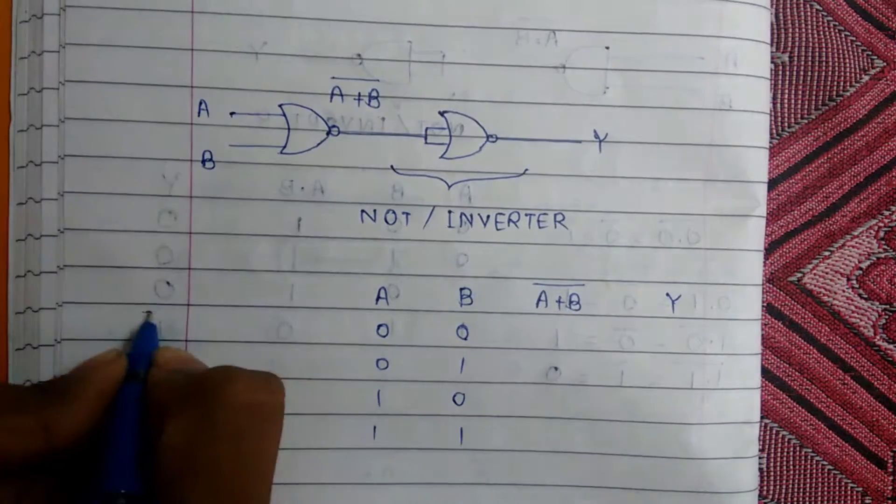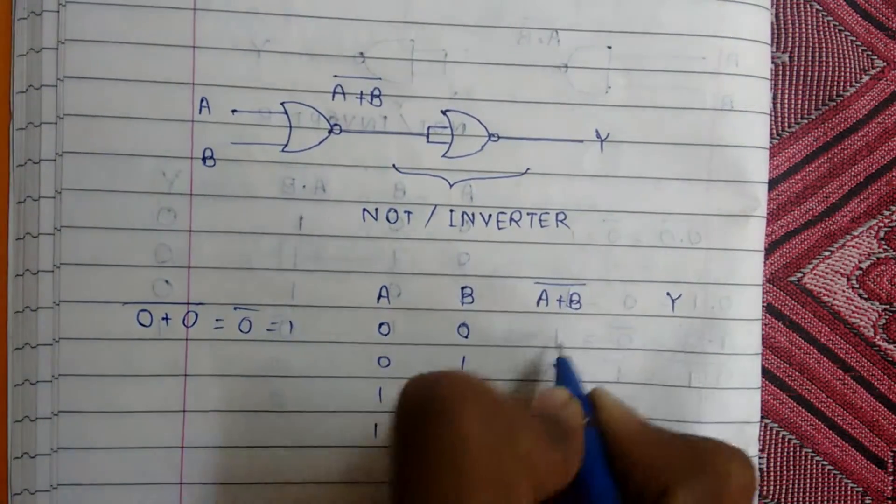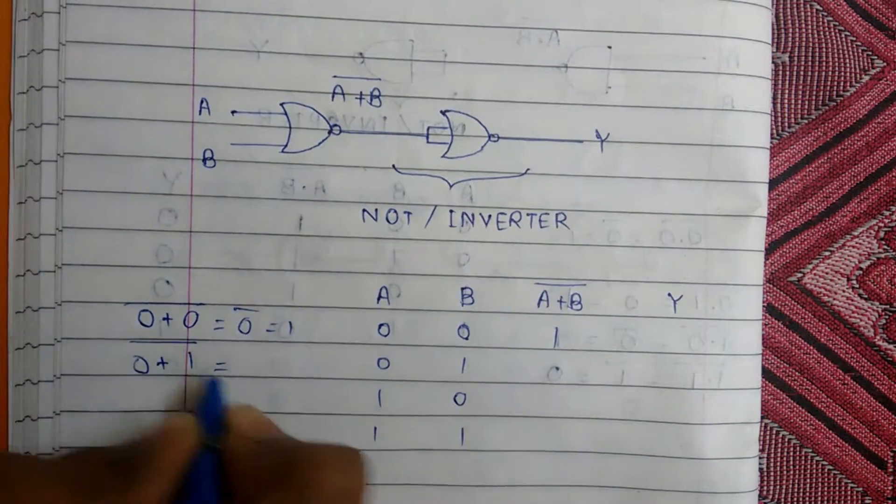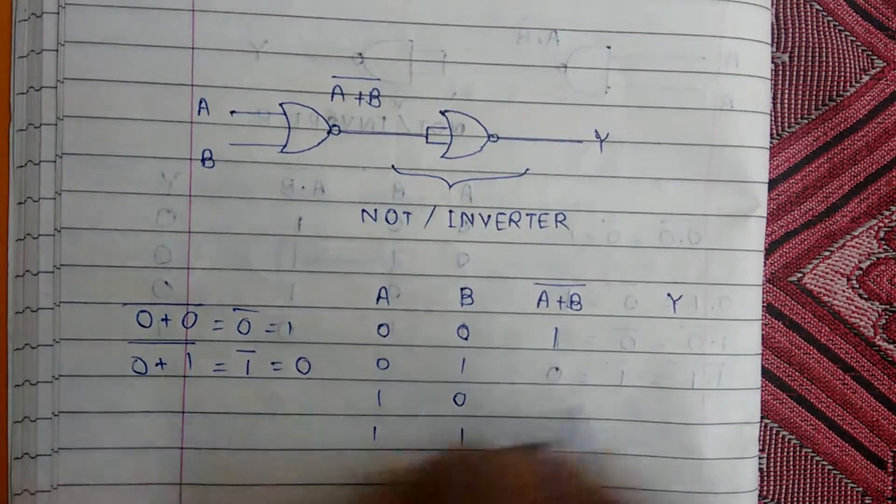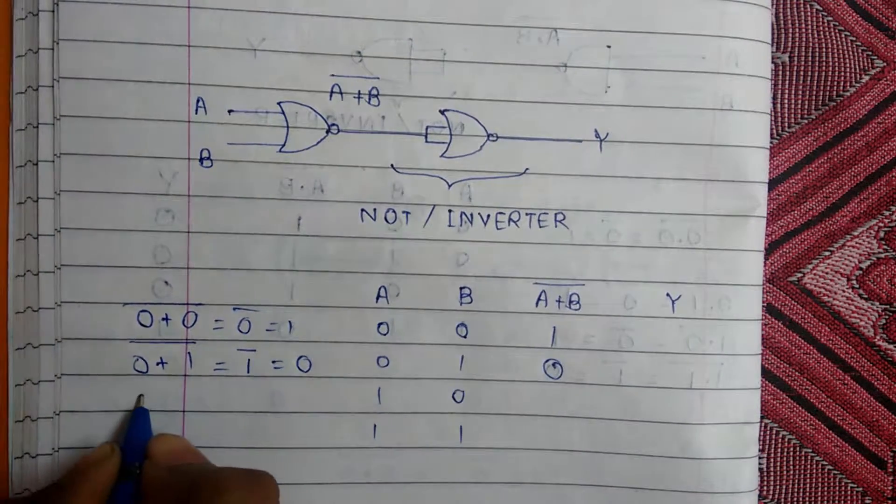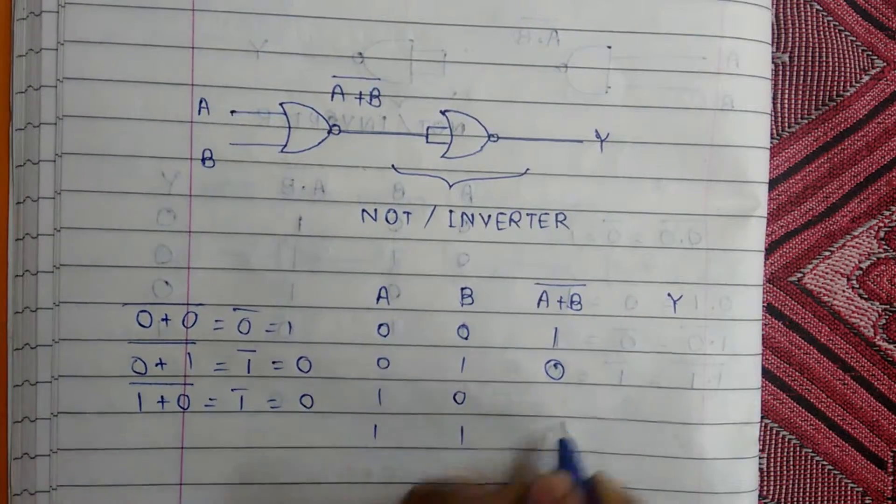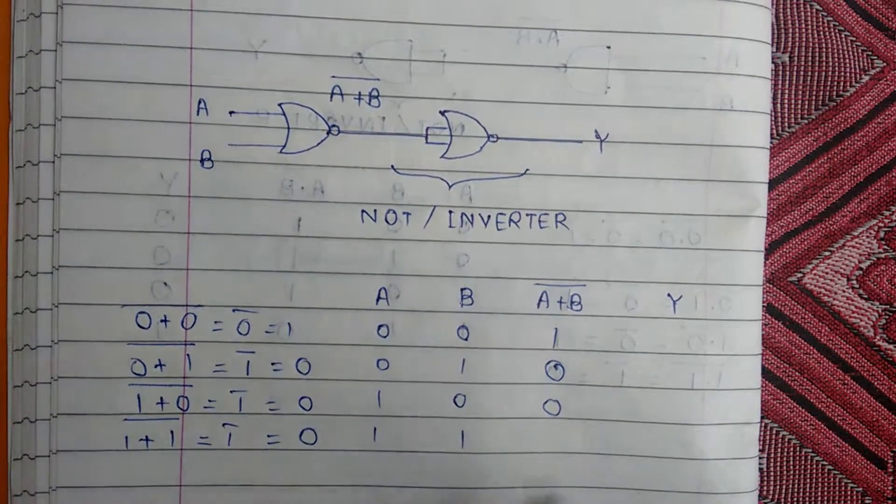So 0 plus 0 and its complement equals 0's complement equals 1. 0 plus 1 equals 1, and its complement is 0. 1 plus 0 in its complement, that is 1's complement, equals 0, and 1 plus 1 its complement equals 1's complement equals 0.